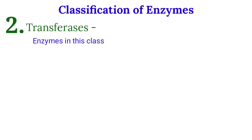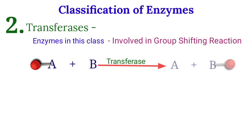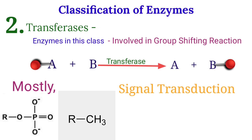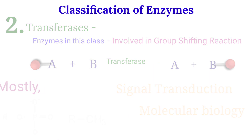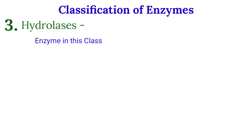The next class is transferases. Enzymes in this class are involved in group-shifting reactions, where a group is transferred from one molecule to another. Many times the transfer of a phosphate group or methyl group is carried out by these enzymes. We will study more about them in the signal transduction and molecular biology sections.